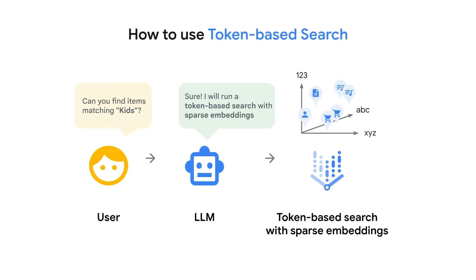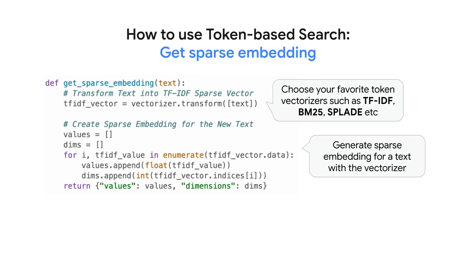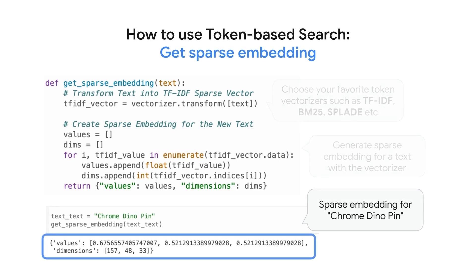Let's explore how to use token-based search with Vertex AI Vector Search using a sample dataset. In this example, we will use 200 items from the Google Merch Shop dataset. We begin by using a vectorizer to transform our text into sparse embeddings. In this example, we will use a TF-IDF vectorizer from the scikit-learn library. TF-IDF is a common algorithm that gives more weight to important words within a text. This function takes the text like 'chrome dynopin' and feeds it into the vectorizer. The output is three values with their dimensions — this is the sparse embedding for the text.